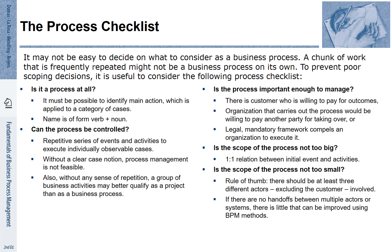We also have to ask ourselves: is it important enough to show it as a process? This can be related to the willingness of a customer to pay for the outcomes of the process, or whether an internal unit is desiring these outcomes. Major companies associate processes with criteria of value — for example, a major company may say they only consider a process at this abstract level if it generates more than one million euros of income per year.